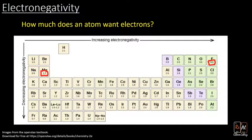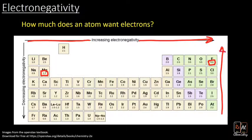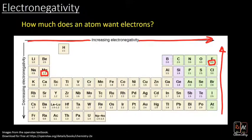There's actually a periodic trend: as we move from left to right, electronegativity increases. And as we move from top to bottom, electronegativity increases. The only exception to this rule is the noble gases, which have been left off this table — they don't follow that trend. But otherwise, you can use the electronegativity values on the periodic table to figure out how much an atom wants electrons and from that, whether a bond is polar or not.